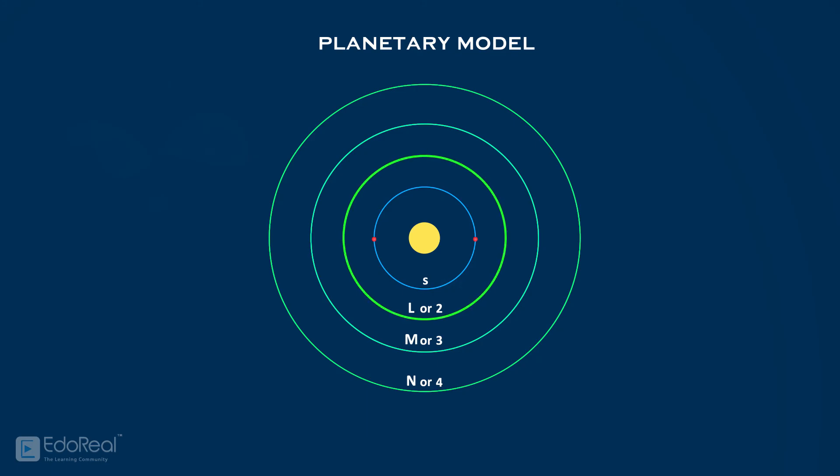The L-orbit or second energy level represents s orbital and p-subshell. Here, 4 orbitals contain 8 electrons, a pair for each orbital.